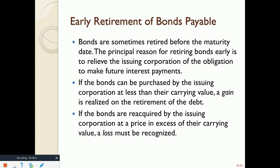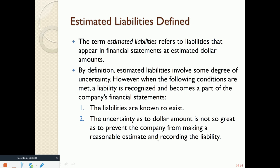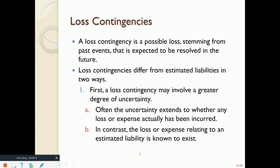Sometimes bonds could be retired early before we get to the maturity date, as stated in the bond agreement. If the bond repayment amount is less than the carrying value, we have a gain on early retirement of the bond. If we have to pay back more than the carrying value, we recognize a loss on early retirement of bonds. Estimated liabilities are where we know a liability exists but we don't know exactly what the dollar amount is — for example, when we sell a product or service with a warranty. Certain customers will come back to utilize the warranty, but we don't know exactly how many, so we have to do our best estimate.